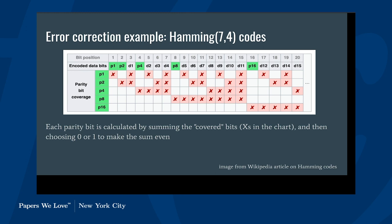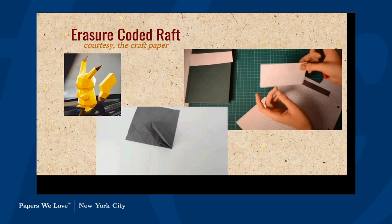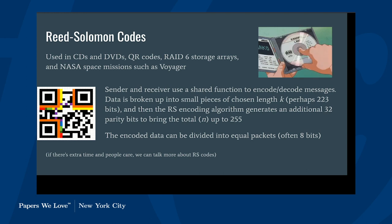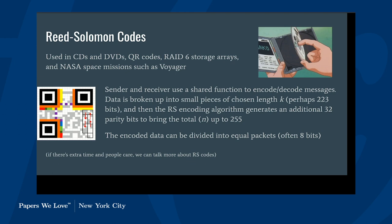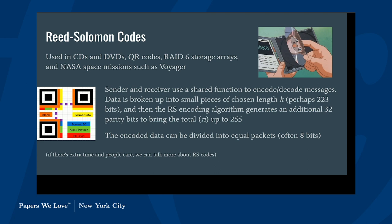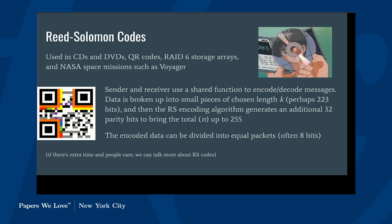RS codes are used heavily in distributed storage systems. Apart from Raft, RS codes are used in many systems — QR codes, DVDs, and NASA space transmissions. Most of these are not distributed consensus applications. A lot of RS code usage is for wireless transmission, where the channel is inherently extremely lossy, so you need error correction to deal with unreliable transmission.